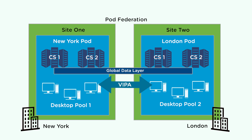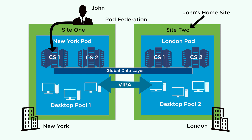Let's look at an example of a global entitlement whose use home site policy is enabled. In this example, an entitled user named John has a home site in London, but he's traveling and is connected to a connection server instance in New York. When John connects to the connection server instance in New York, the global entitlement use home site policy causes Horizon 7 to start looking for a desktop in John's home site in London. If a desktop is not available in John's home site, Horizon 7 looks for a desktop in the other sites in the pod federation.